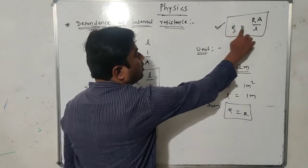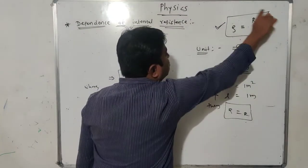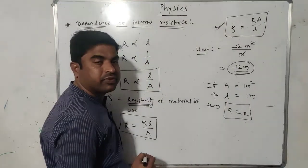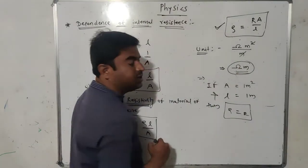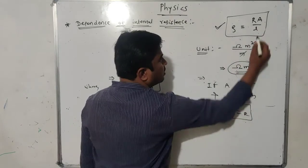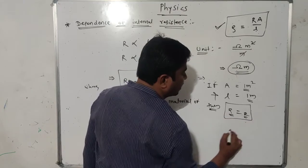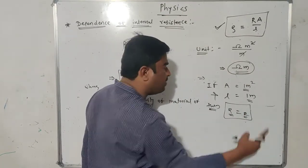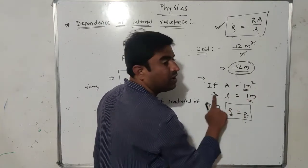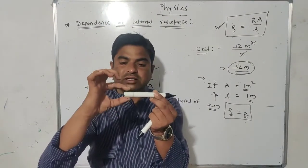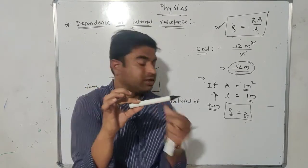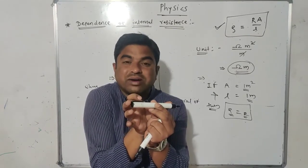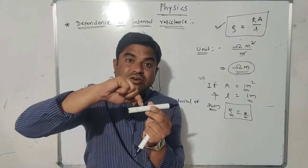Using this formula for resistivity ρ = RA/L, the unit of specific resistance is ohm·meter. If A is 1 meter squared and L is 1 meter, then ρ equals R. Therefore, resistivity of a material is defined as the internal resistance of a wire made of that material having unit length (1 meter) and unit cross-sectional area (1 meter squared). The internal resistance of such a wire is called the resistivity or specific resistance of that material.